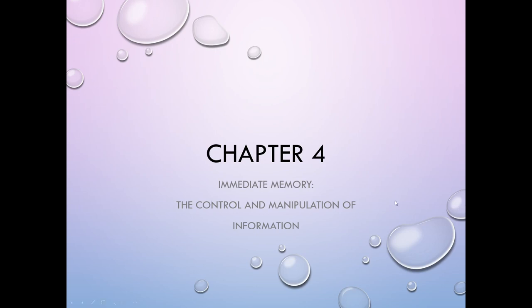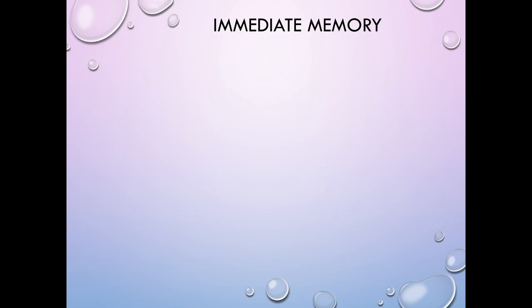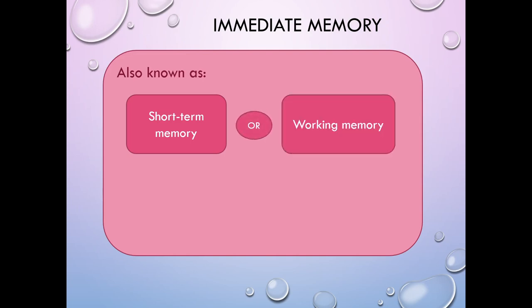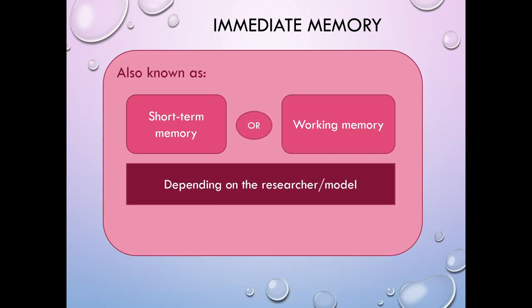Immediate memory has different names. It's sometimes referred to as short-term memory, and sometimes as working memory. It really depends on who the researcher is or which model of memory you're using. You'll see by the end of this chapter that there is a distinction between short-term memory as defined by Atkinson and Shiffrin's model versus working memory as defined by Baddeley's model.